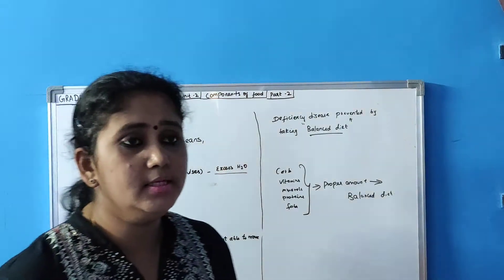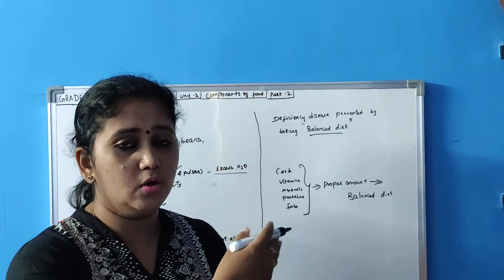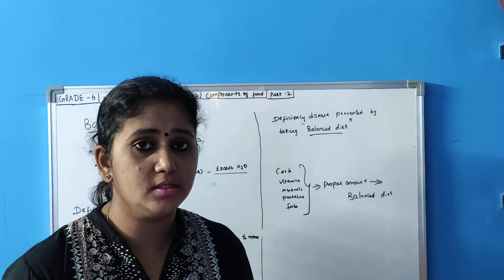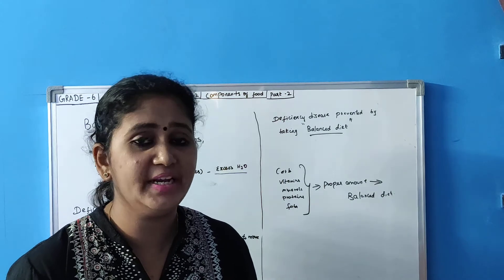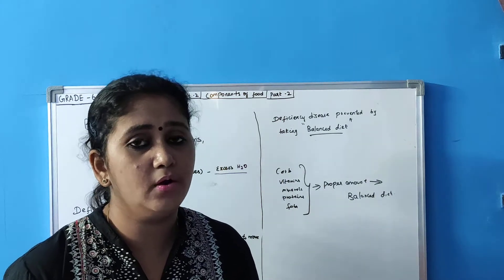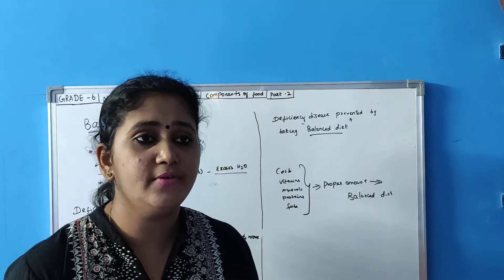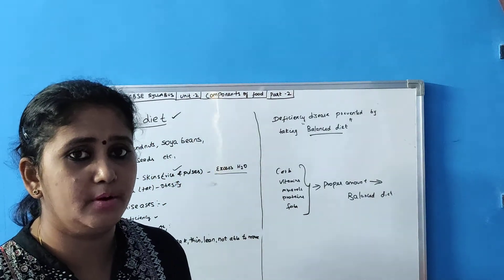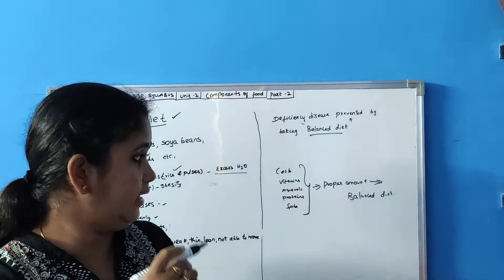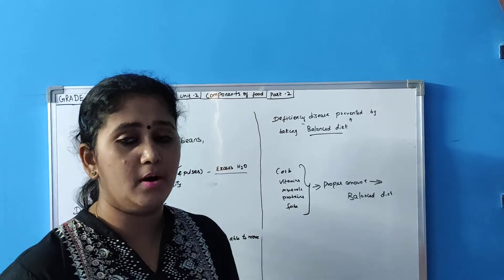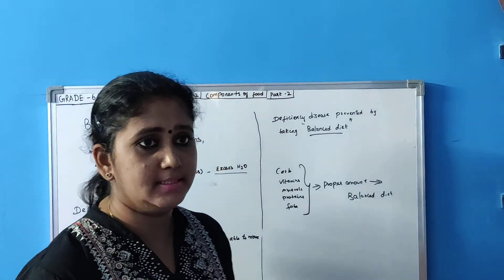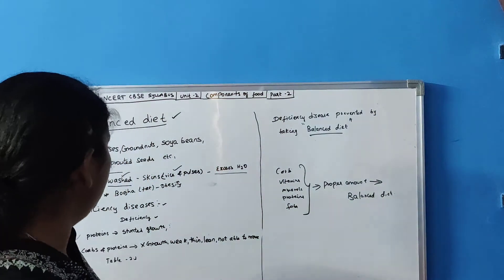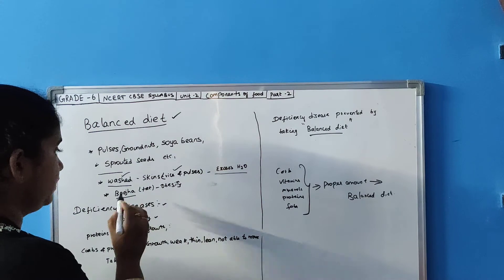Our body also needs roughage in order to get rid of undigested food, as we saw earlier. Water is also needed by our body. So all types of nutrients in proper amounts, including roughage and water, is known as a balanced diet.